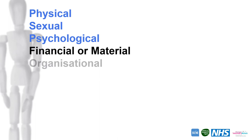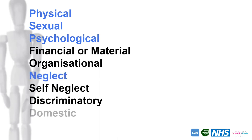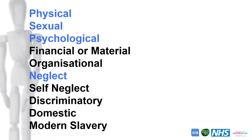The ten types of abuse are, in no particular order: physical, sexual, psychological, financial or material, organisational, neglect, self-neglect, discriminatory, domestic, and modern slavery. The ones listed in blue on the screen are the four that we attach to children and young people. I'm going to go through this list with some brief definitions in a bit, but first we're going to talk about the signs and signifiers of abuse.